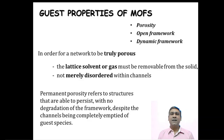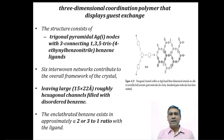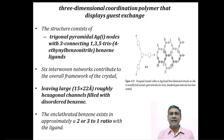Clathrates are also a type of solid-state supramolecular structure, but they are stable only when the gas species are included — that should not be the case with metal organic frameworks. A typical example is a three-dimensional coordination polymer that displays guest exchange, using the organic ligand 1,3,5-tris(4-ethynylbenzonitrile)benzene with silver(I) ions as the nodes or hubs.